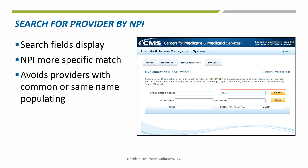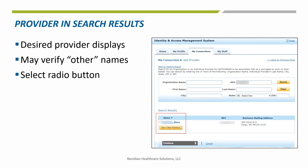There are multiple search fields available to use in the search for a provider. Using an MPI is more specific and avoids additional providers with the same name populating. Enter the MPI and search. The search results area will appear for the MPI that was entered. Selecting the radio button next to the name will display further actions. Use Continue to move forward in the process.